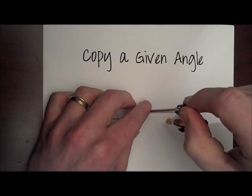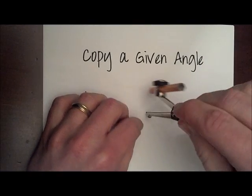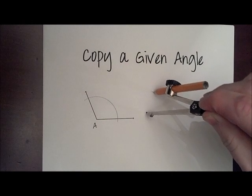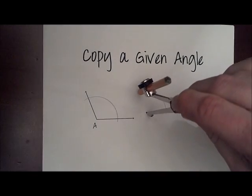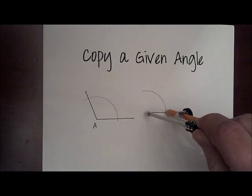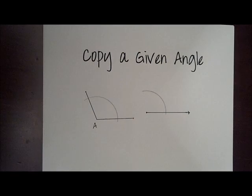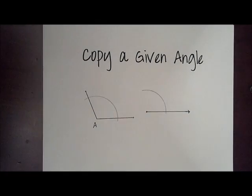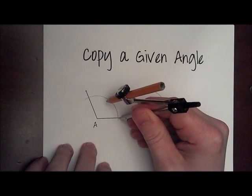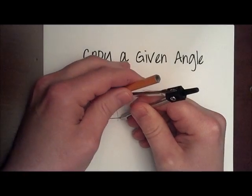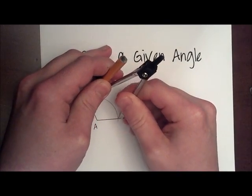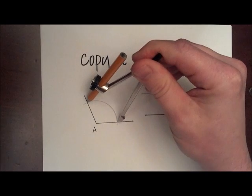So here's the same arc that we had constructed in the first angle to the left. Now we're going to measure the fatness, as we like to call this. The fatness is going to be the measurement between the two points of intersection of the arc we drew in the original angle.